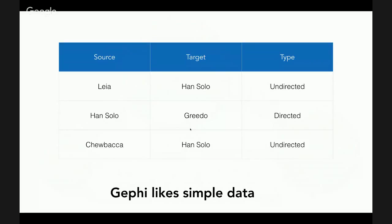We're going to be mostly tinkering around with Gephi because it's easy to show. Gephi very much likes simple — or better, focused — data. If you have really long and complex spreadsheets, before you bring data into one of these pieces of software, you really want to pare it down. That paring-down process is really a productive exercise of figuring out precisely what it is you're trying to learn about your data by modeling it as a network.